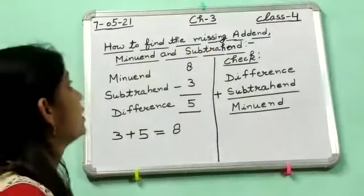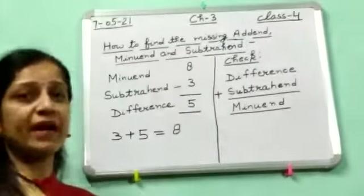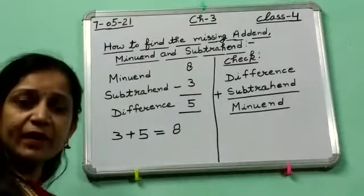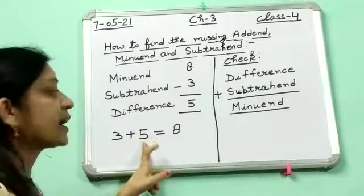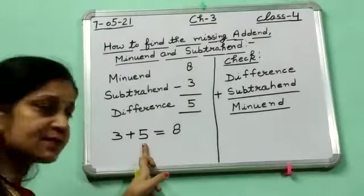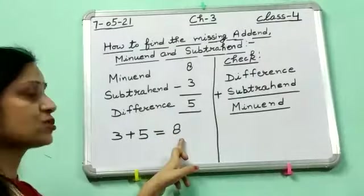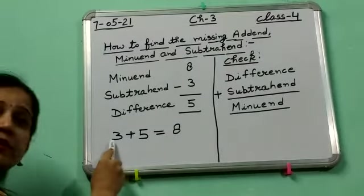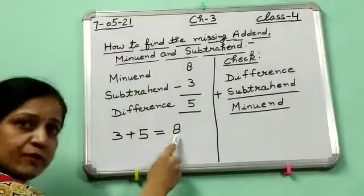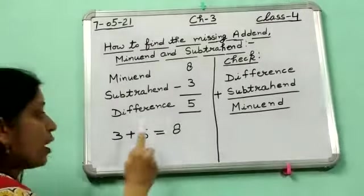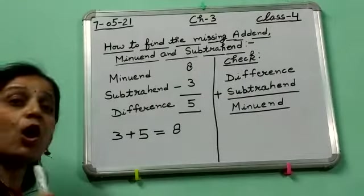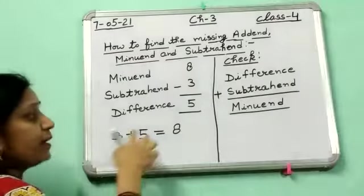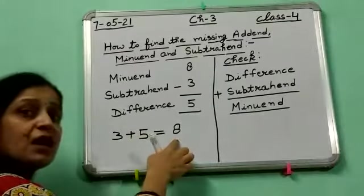What are addends, students? I have explained you — the two numbers which are added are called addends, and this is called the sum. Now suppose one addend is given to you and the sum is also given to you. You have to find the second addend. Then how will you find? You have to subtract the given addend from the sum.